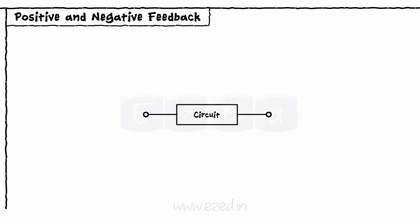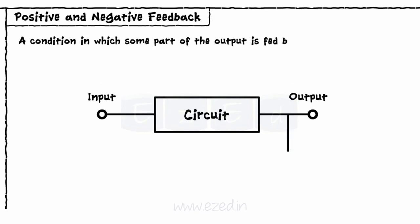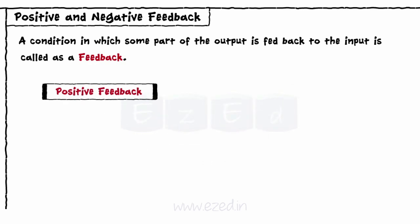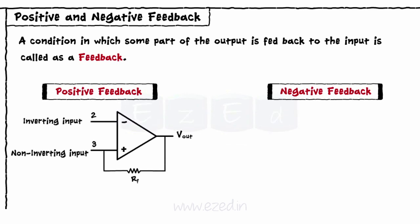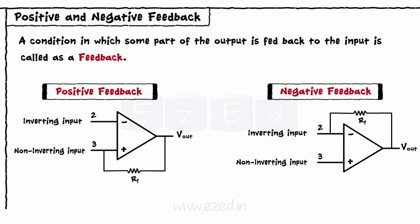Any circuit has two major parameters: input and output. A condition in which some part of the output is fed back to the input is called feedback. In an op-amp, we have two types of feedback — positive feedback and negative feedback. When some part of the output is fed back to the non-inverting terminal, it is called positive feedback. When fed back to the inverting terminal, it is called negative feedback. Resistor RF is called the feedback resistor.